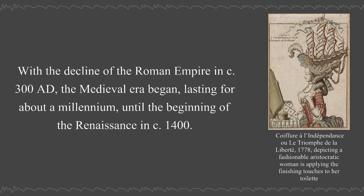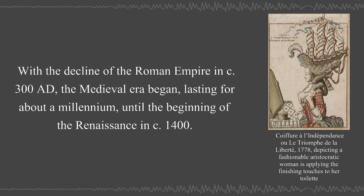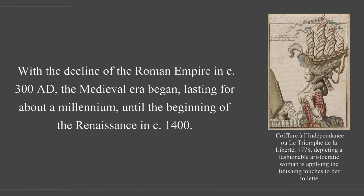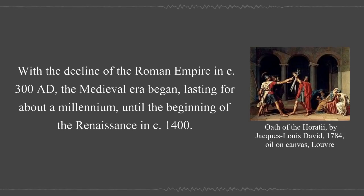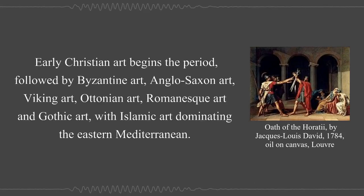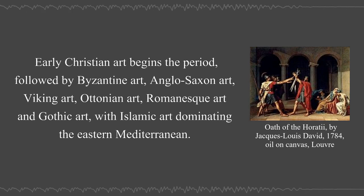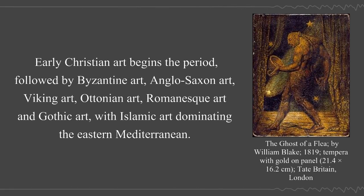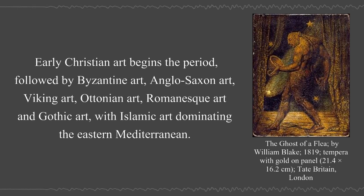With the decline of the Roman Empire in circa 300 AD, the medieval era began, lasting for about a millennium until the beginning of the Renaissance in circa 1400. Early Christian art begins the period, followed by Byzantine art, Anglo-Saxon art, Viking art, Ottonian art, Romanesque art, and Gothic art, with Islamic art dominating the eastern Mediterranean.